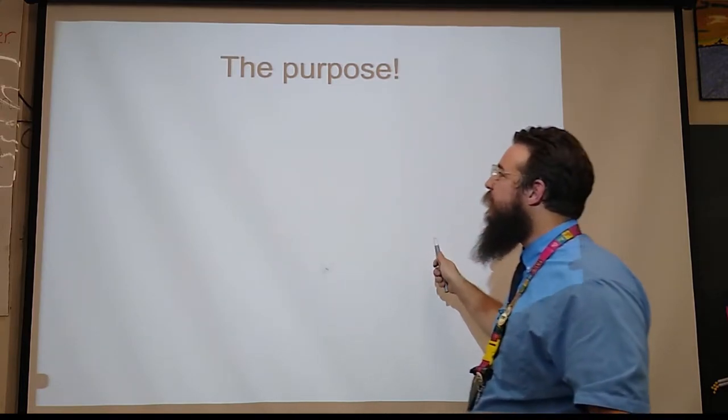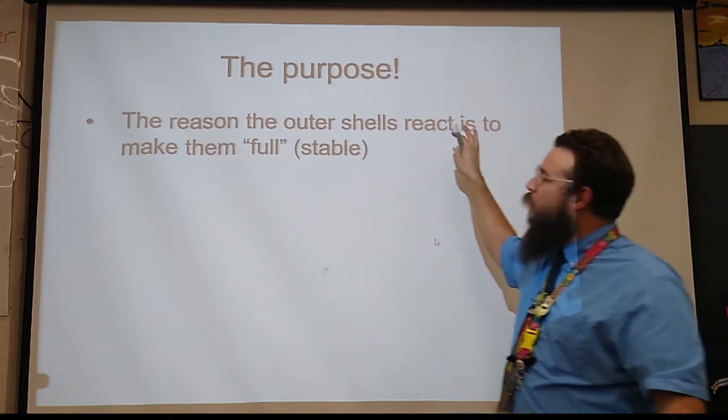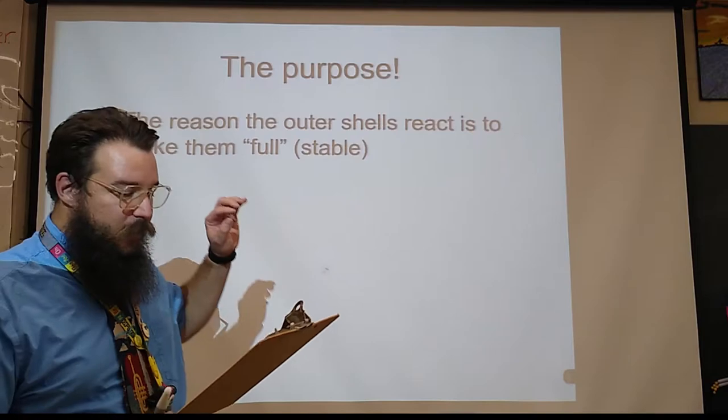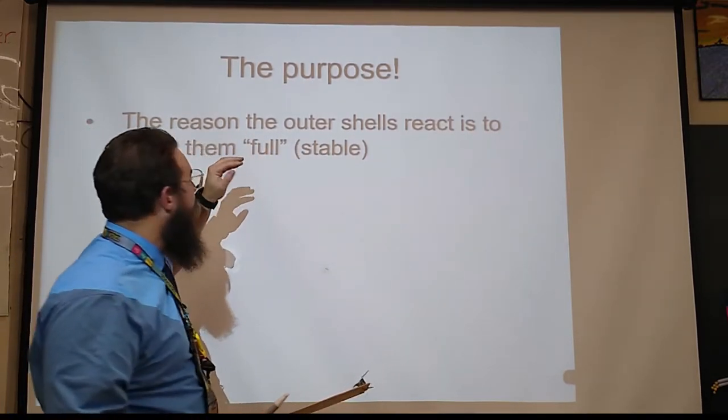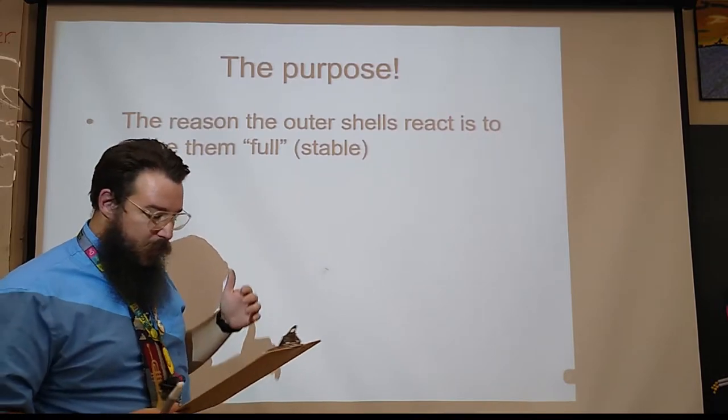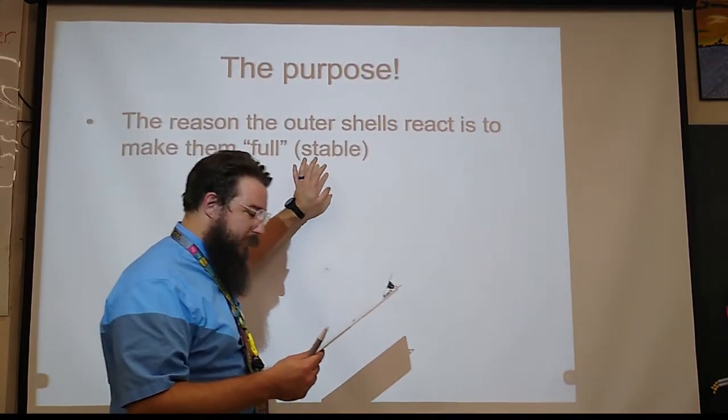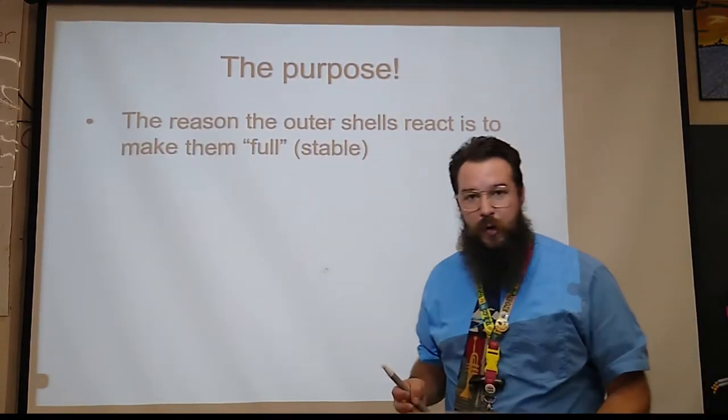All right, so the purpose of the valence electrons, the reason why the outer shells need to be full, that's what we're talking about right now. So the outer shell, the outermost shell, or sometimes you could call it the valence shell, needs to be full of electrons for the atom to be stable. So a stable atom has a full outer shell.